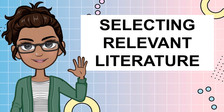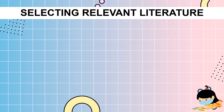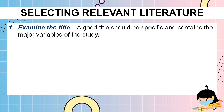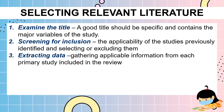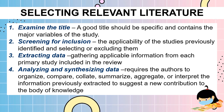But how are we going to select a relevant literature? Once you have found the articles, books, or information, you need to examine the materials. To help you in choosing the right reference, check out these guidelines. First, examine the title — a good title should be specific and contain the major variables of the study. Screening for inclusion refers to the applicability of studies previously identified and selecting or excluding them. Extracting data involves gathering applicable information from each primary study included in the review. Analyzing and synthesizing data — this last step requires the authors to organize, compare, collate, summarize, aggregate, or interpret the information previously extracted to suggest a new contribution to the body of knowledge.